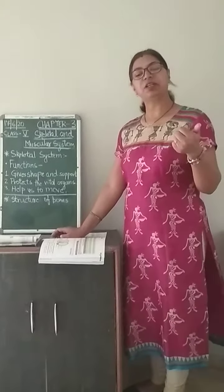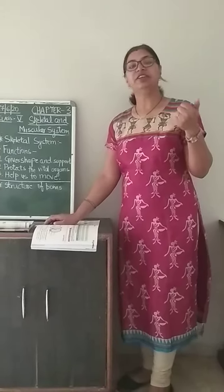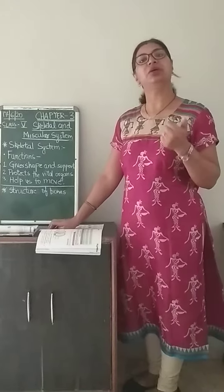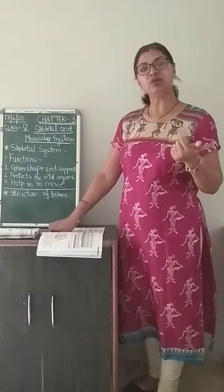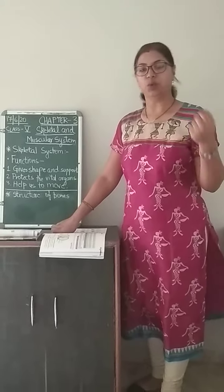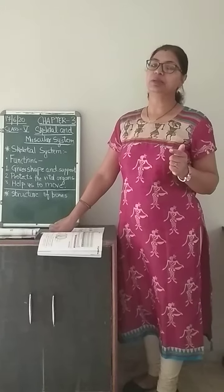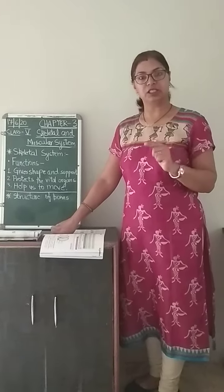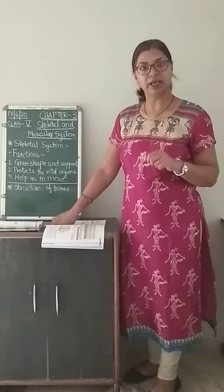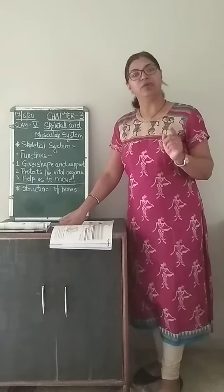Now tell me, what was chapter number 1? It was reproduction in plants. I hope you remember the chapter well, and in case you have forgotten, you can watch the previous videos. And chapter number 2 was seed germination and dispersal. Do you remember you have already done a project on that? That means you must have understood it well.